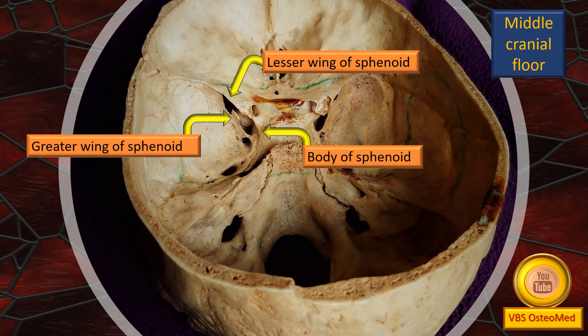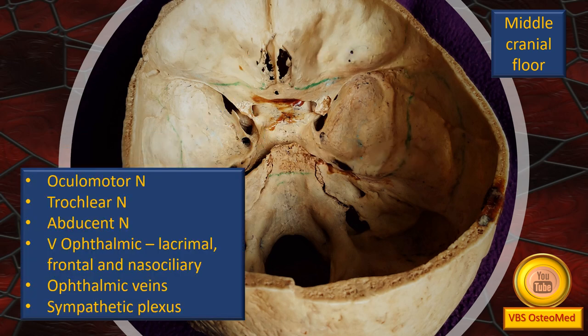The superior orbital fissure is bounded by: upper border — the lesser wing; lower border — the greater wing; medial border — the body of the sphenoid bone. Structures are not seen in a dry skull, but a number of structures pass through it in both directions between the middle cranial fossa and the orbit. These include the third, fourth, and sixth cranial nerves; branches of the fifth cranial nerve (lacrimal, frontal, and nasociliary); ophthalmic veins; and sympathetic plexus.